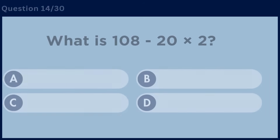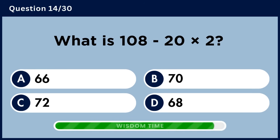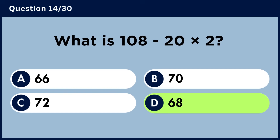What is 108 minus 20 multiplied by 2? Answer D: 68.